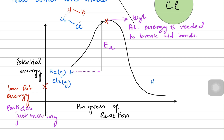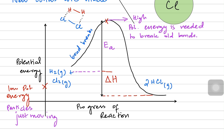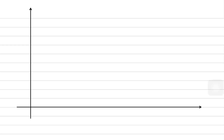Activation energy is the energy that begins the reaction. By the end of the reaction we get the product, which is HCl. The net change in energy from the reactant level to the product level is known as the enthalpy — we call it delta H. The graph moves upwards during bond breaking and then downwards during bond making, since bond making releases energy. That is the background of an energy profile diagram.